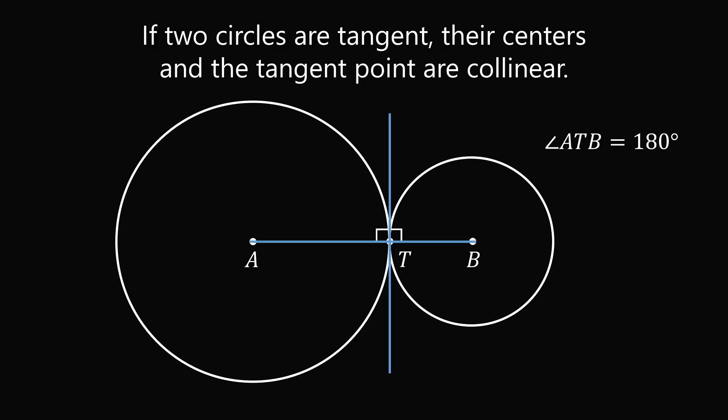In other words, ATB is a straight line segment and A, T and B are collinear. This is true not only for externally tangent circles, but it's true for internally tangent circles too. So we'll use this principle to solve the problem.